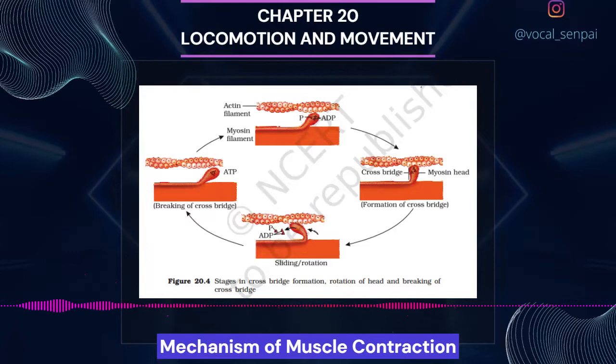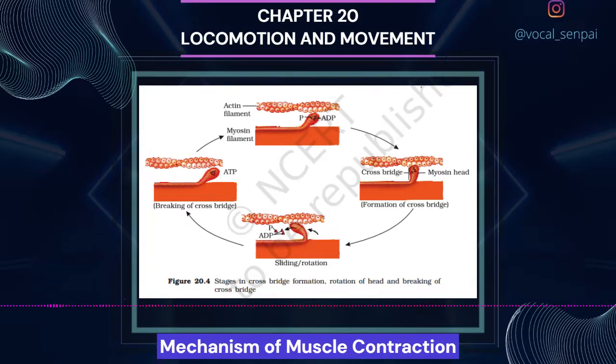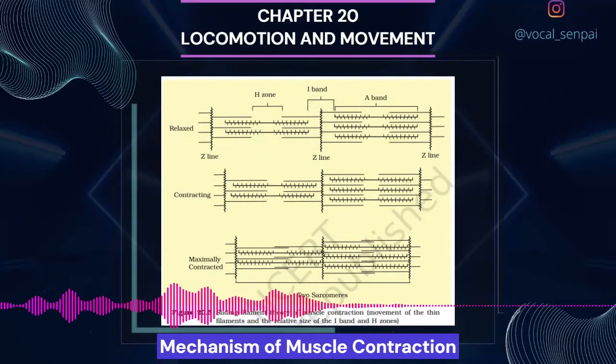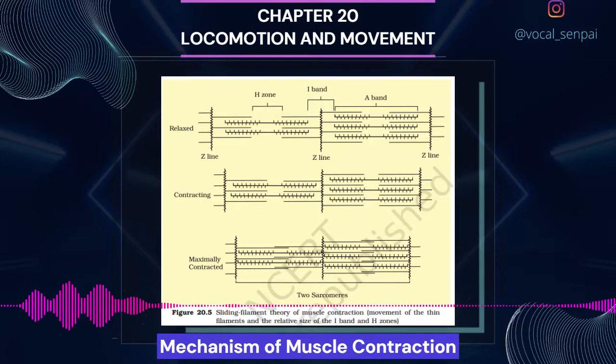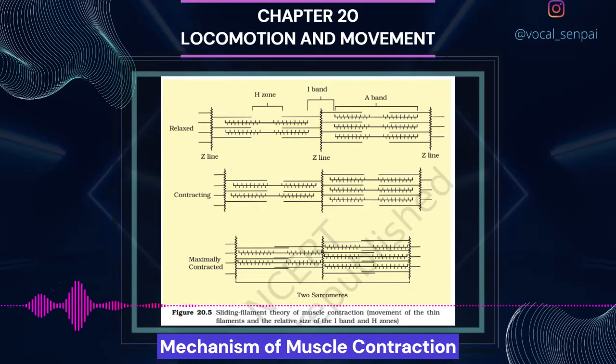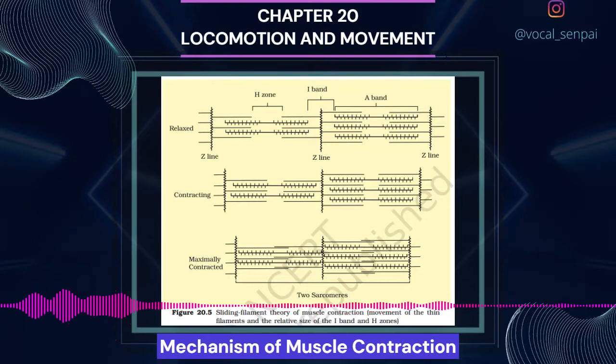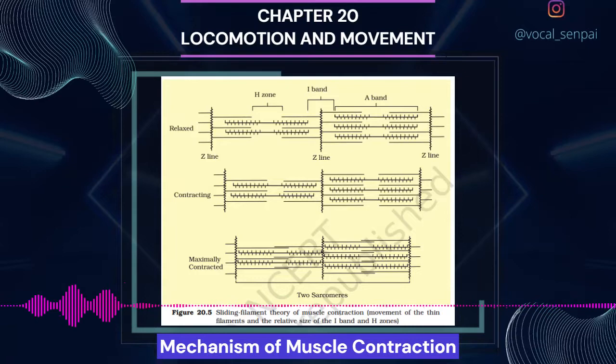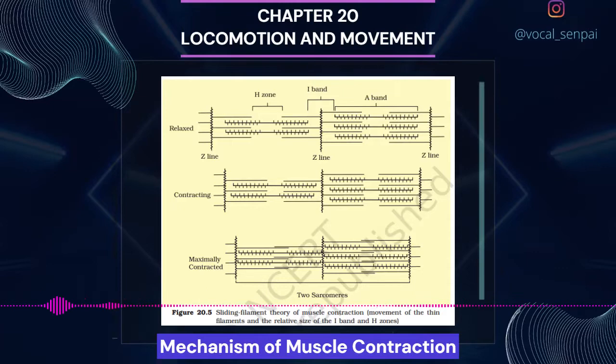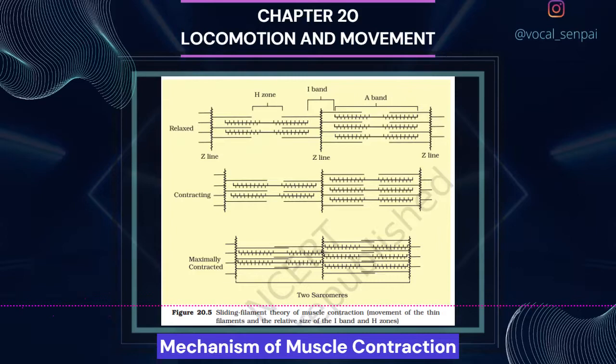The Z-lines attached to these actins are also pulled inwards, thereby causing a shortening of the sarcomere, i.e., contraction. During shortening, the I-bands get reduced whereas the A-bands retain their length. The myosin, releasing ADP and Pi, goes back to its relaxed state. A new ATP binds and the cross bridge is broken. The ATP is again hydrolyzed by the myosin head and the cycle of cross bridge formation and breakage is repeated, causing further sliding. The process continues till the Ca²⁺ ions are pumped back to the sarcoplasmic cisternae, resulting in the masking of actin filaments. This causes the return of Z-lines back to their original position, i.e., relaxation.